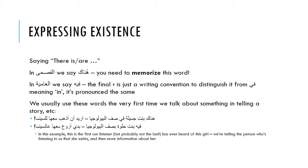First of all, we have to think about how we express existence in Arabic — this is a very useful thing that you do a lot. You want to say: there's a person in this room, there's nothing in my bag, there are people in this room. In Arabic, we use a special word for this in both فصحى and عامية, and it usually comes at the beginning of the sentence.